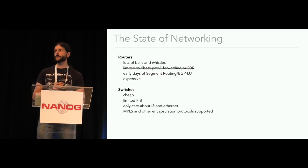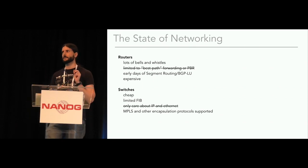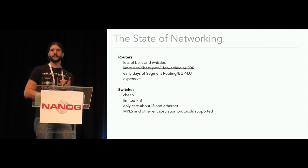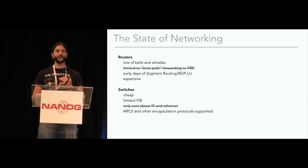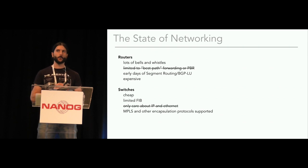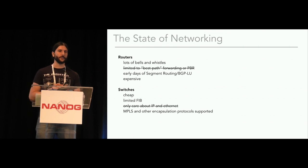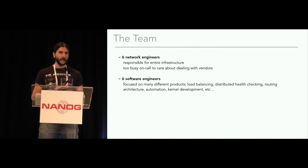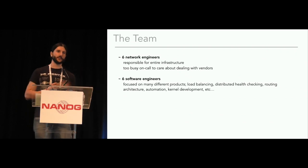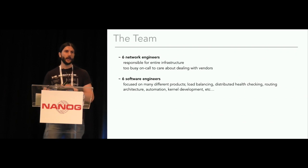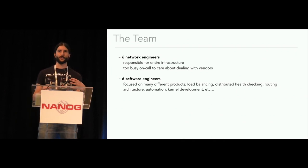The state of networking in 2015 was pretty much the same as in 2013, but a few differences changed the game completely. It was the early days of segment routing and BGPLU, which went well with what we were doing. And switches started to have more modern ASICs that could do encapsulation protocols like MPLS or VXLAN. The team had also grown quite a bit — we now had six network engineers and six software engineers to work on a proper solution.